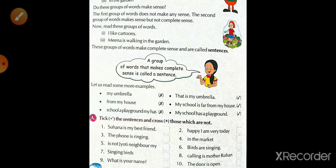That is my umbrella. From my house, we can't get any sense from this sentence. My school is far from my house. And, my school has a playground. These three sentences provide us proper sense of this sentence. So, that these three type of words, जो group का words है, वो क्या है sentence है?